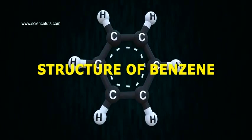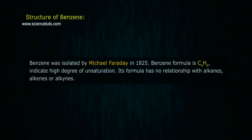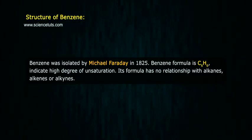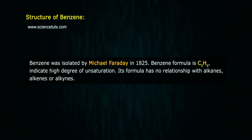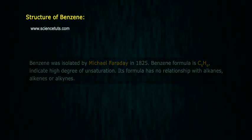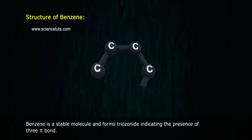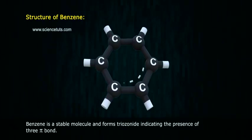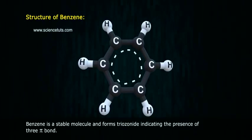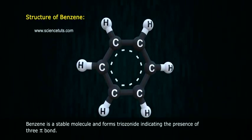Benzene was isolated by Michael Faraday in 1825. Benzene's formula is C6H6, indicating a high degree of unsaturation. Its formula has no relationship with alkanes, alkenes, or alkynes. Benzene is a stable molecule and forms triozonide, indicating the presence of 3 pi bonds.